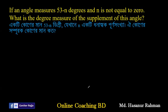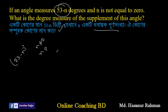If an angle measures 53 minus n degrees — ek-ti angle jajar bhelu huyiloh 53 minus n degree. And n is not equal to 0. A jekhan e n ek-ti-dhanat tuk purnu shangkha. So, n is a positive integer.